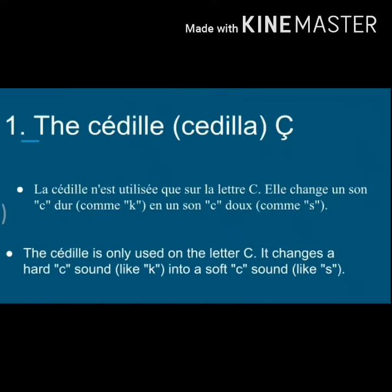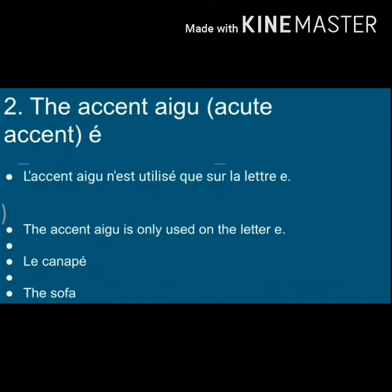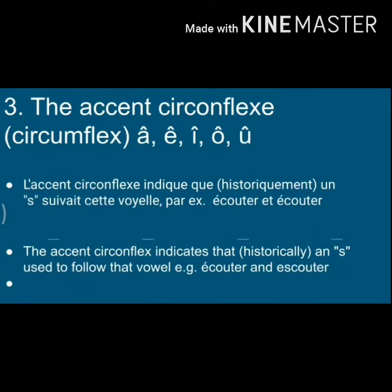L'accent cédille is found on the letter C. L'accent aigu is found on the letter E. L'accent circonflexe is found on the letters A, E, I,